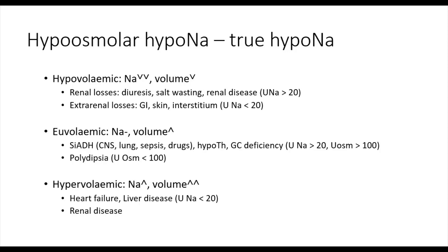When you have salt-wasting nephropathies, central nervous system disease which mitigates this process and leads to salt wasting, or you take diuretics or medications that inhibit the renin-angiotensin-aldosterone system and therefore compromise the ability to reabsorb sodium through the nephrons, all of these processes will lead to more sodium accumulating in the urine, and therefore a urine sodium of more than 20 millimoles per liter.